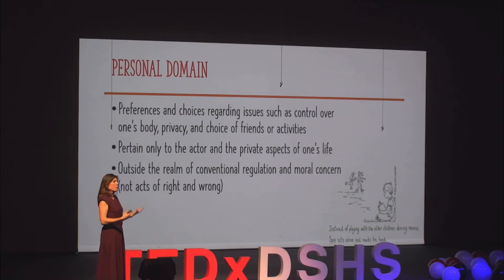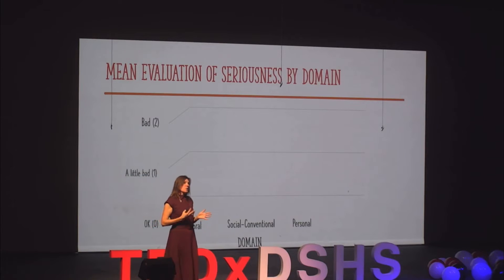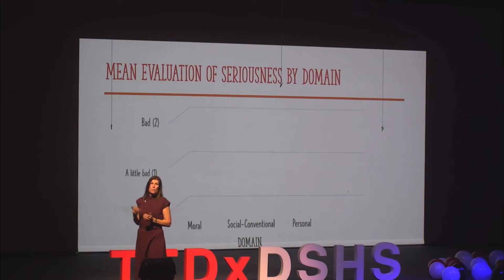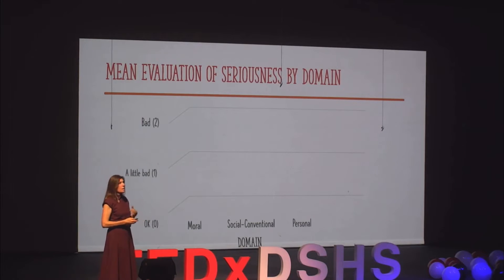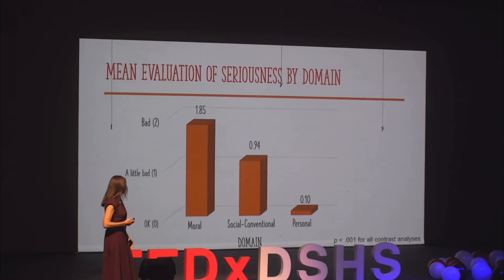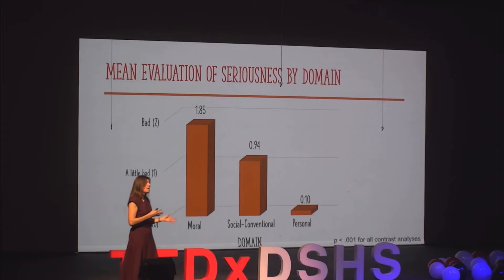When I do my research with young children, I present those different story cards and ask whether what the characters are doing is okay, a little bad, or bad. The results I've found — and social domain theorists have found repeatedly — is that children and adolescents judge transgressions in the moral domain as more serious than social conventional transgressions.